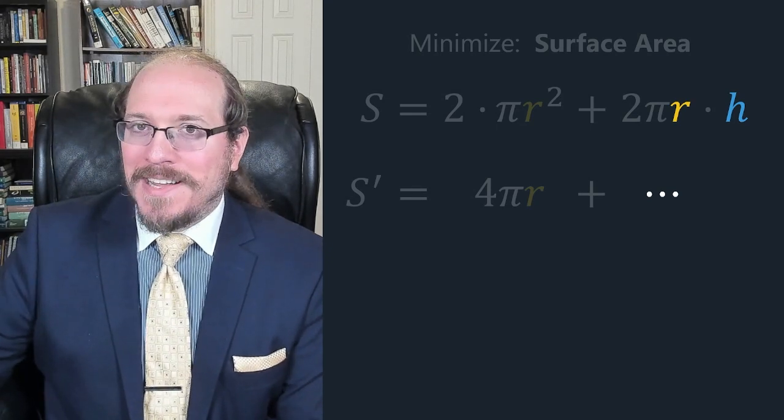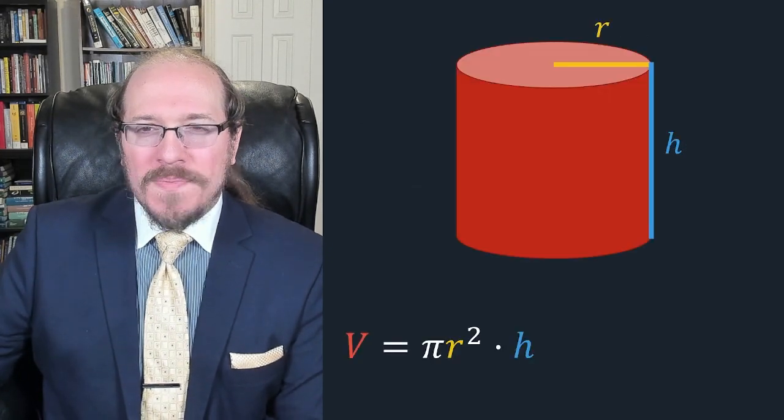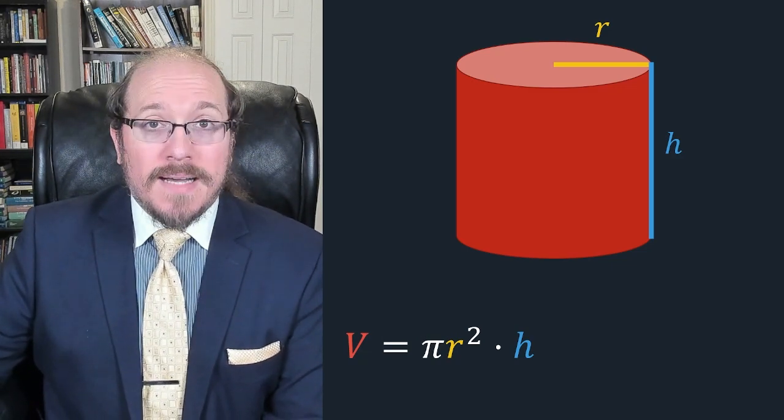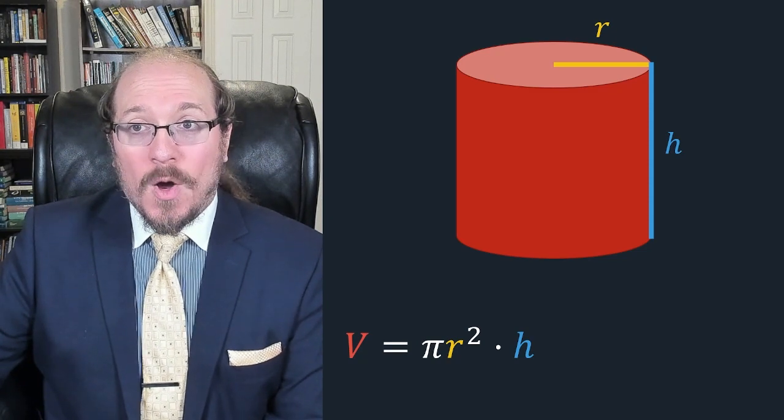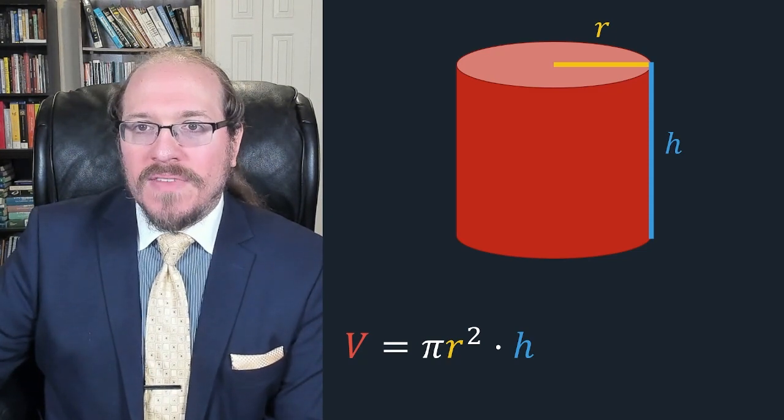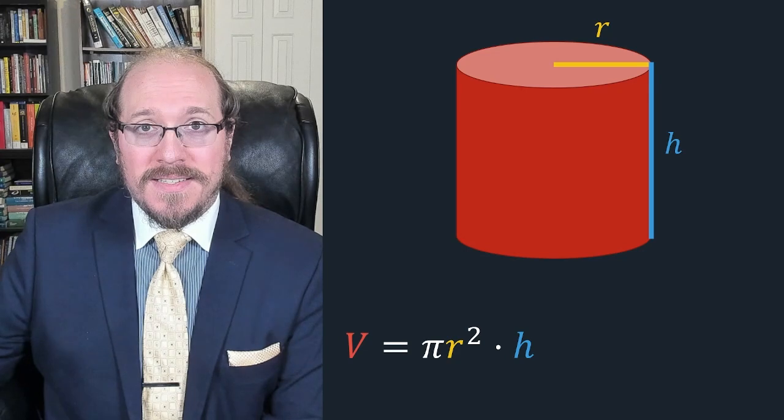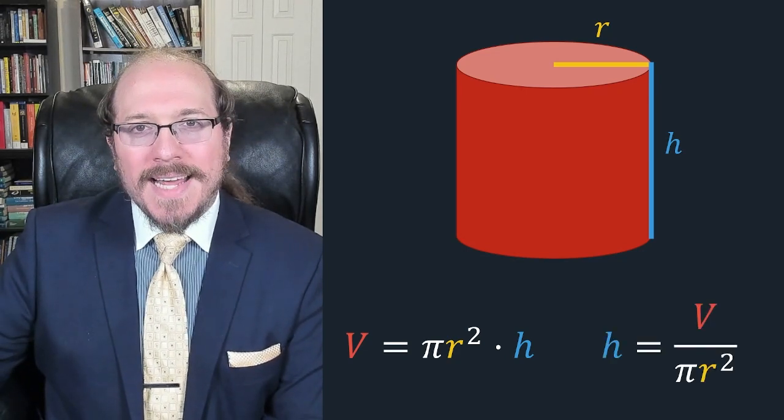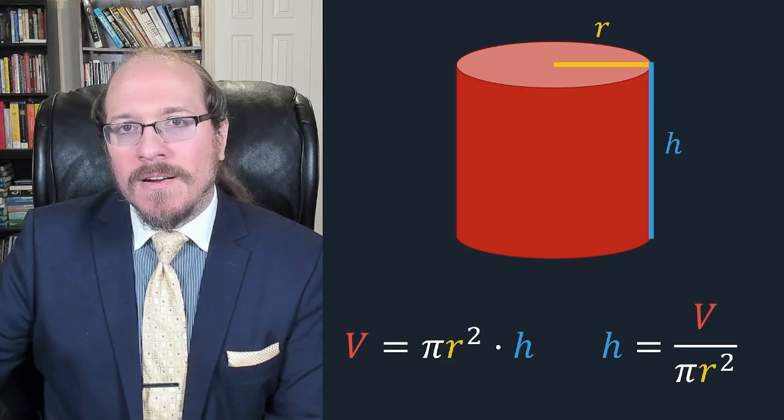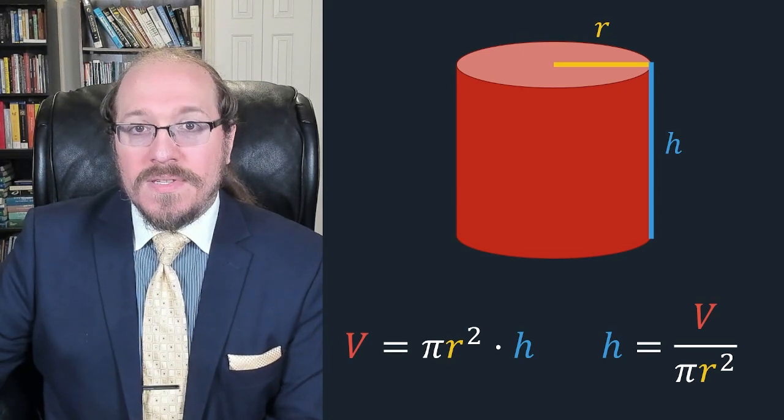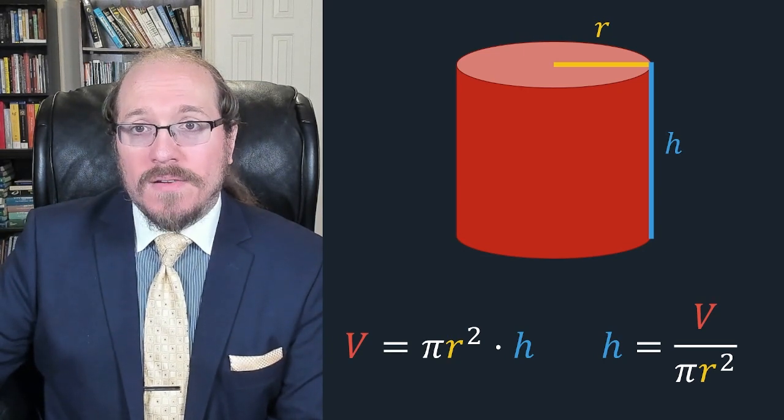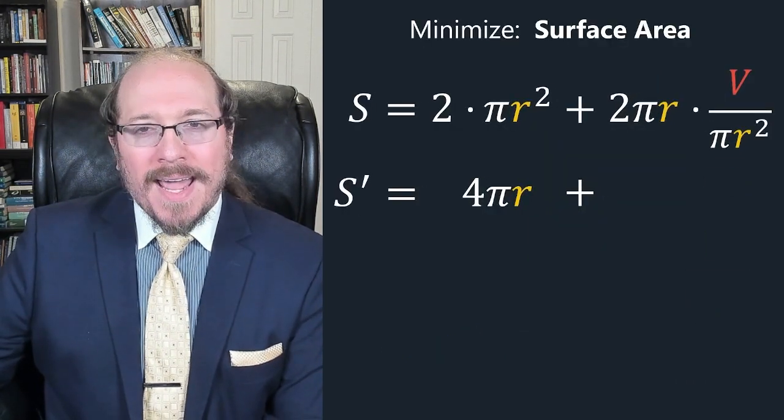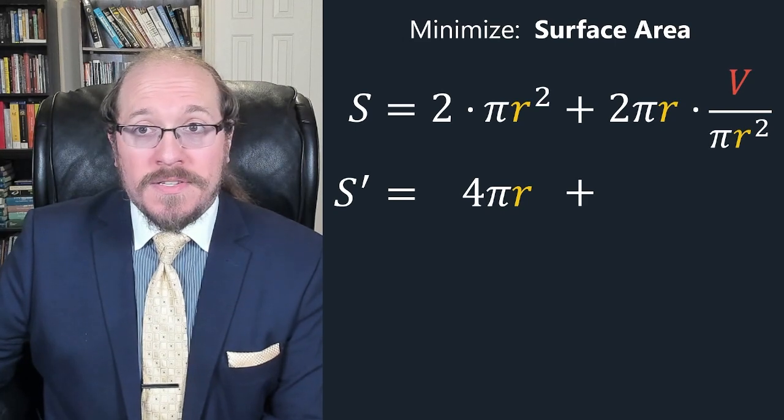But there's a trick we can use to deal with this. Remember that the volume of our can is the area of the base π r² times the height h. We already know what the volume of the can is. That's a constant for our problem. So we could actually solve for the height h in terms of the other variables. We get h equals V over π r². Then we can go back to our surface area and replace h with this expression. Substitute it.